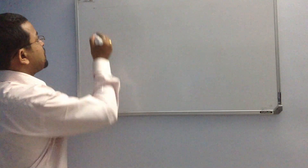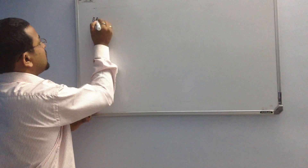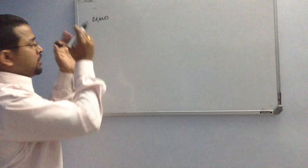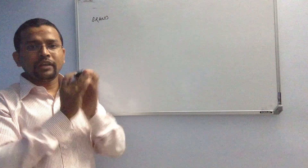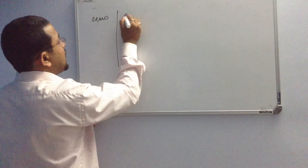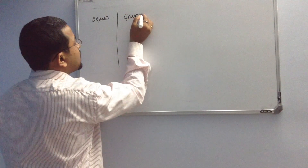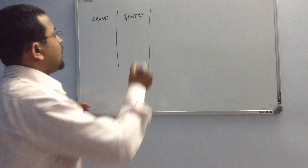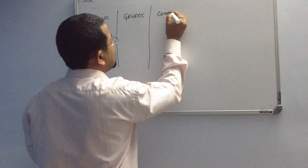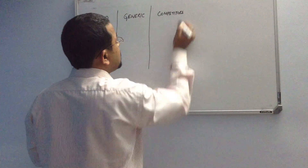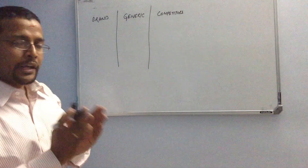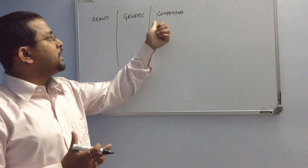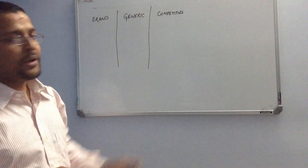The first campaign which you should always create is a brand campaign. This campaign will be targeting all the keywords around your brand name. Secondly, we have a generic campaign, where all the keywords fall into generic terms. Now we have the third campaign, which is targeting competitors' keywords, because you are not alone in the industry and there is always some potential you can draw out by targeting your competitors' names. So this is your competitor campaign.